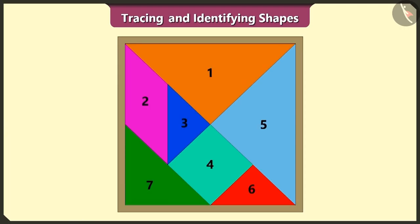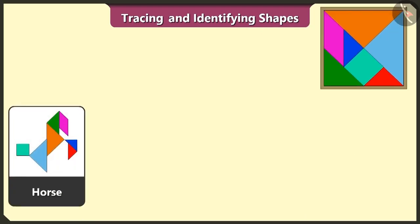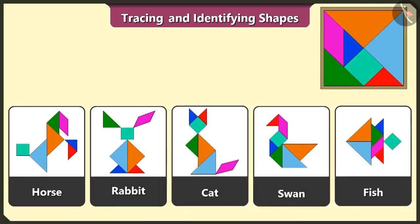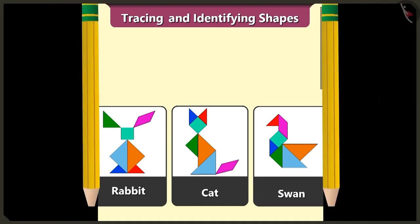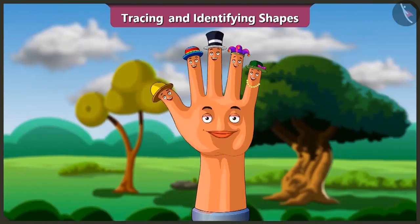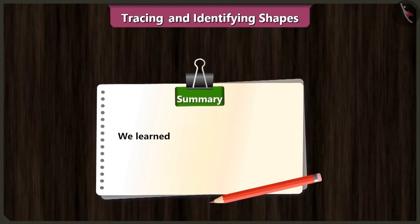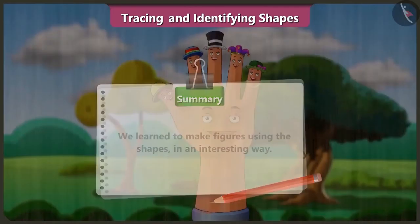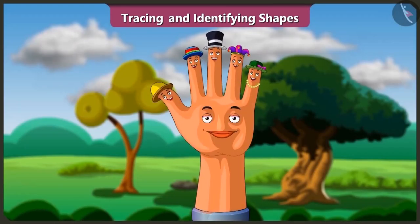We have finally created a horse, rabbit, cat, swan, and a fish using the seven shapes of the tangram. Friends, today we learned to make figures using shapes of a tangram in an interesting way. In the next video, we will learn about lines and their different types.